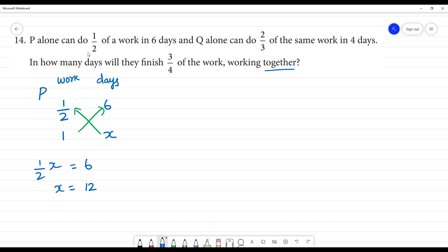So half work 6 days, full work 12 days. So if you want to do a work, that is Q. Q, 2 by 3 of the same work, 4 days. This is work, this is days.